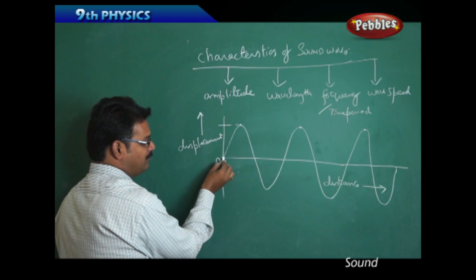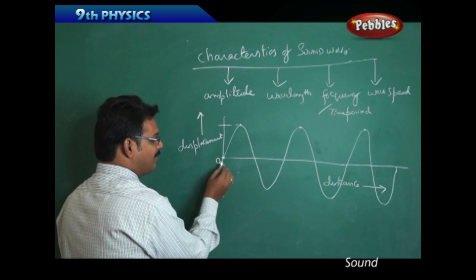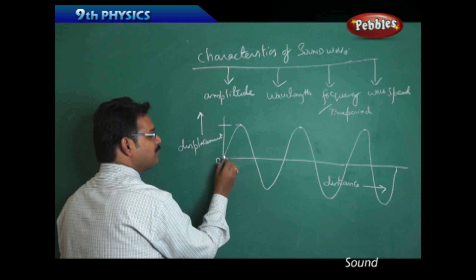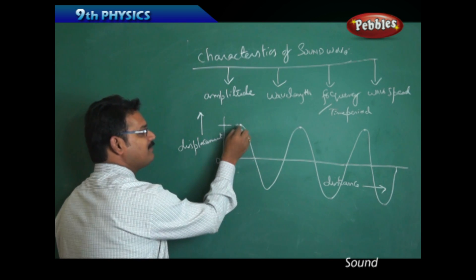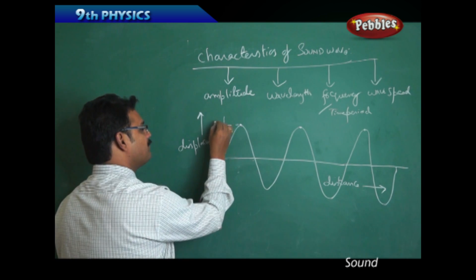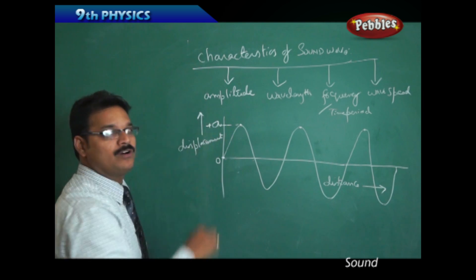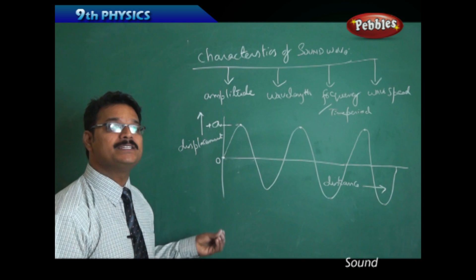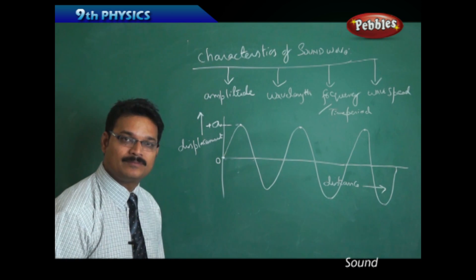When distance is zero, displacement is zero. As the distance increases going towards the right side, the displacement also increases and goes to a maximum value. This maximum value is represented by plus A, and A is called amplitude. Amplitude is the maximum displacement created in the wave.